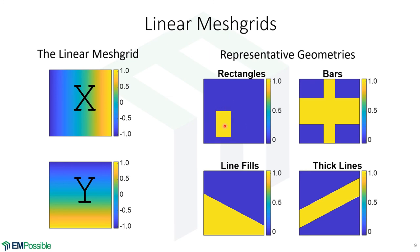Rectangles, even offset rectangles, we can make bars and crosses. We can enter equations for lines and do fills above or below those lines. We can also do kind of thick lines in any direction. Geometries that are sort of Cartesian-ish, we can do with linear mesh grids.